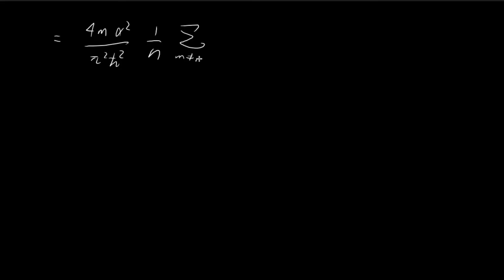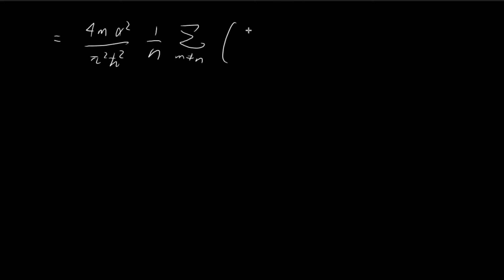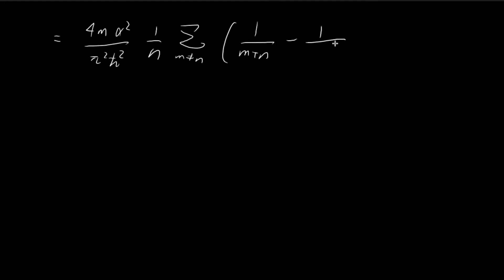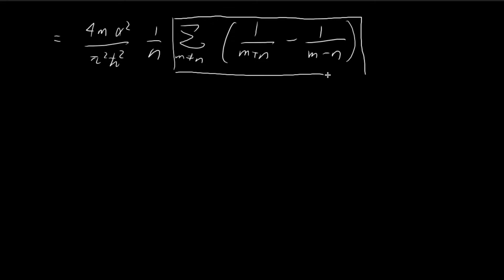Inside the summation we now have two terms: 1 over (n plus m) and minus 1 over (m minus n) — equivalently written as minus 1 over (n minus m) with the sign flipped in the denominator. The challenge is to evaluate this summation. It turns out this summation equals negative 1 over 2n. For the rest of the video we'll show how we reason our way from this expression to negative 1 over 2n.